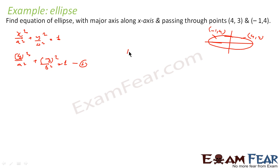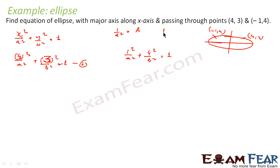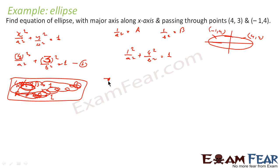Substituting (−1, 4): 1/a² + 16/b² = 1. This is equation 2. Now let 1/a² = A and 1/b² = B. So we get: 16A + 9B = 1, and A + 16B = 1.